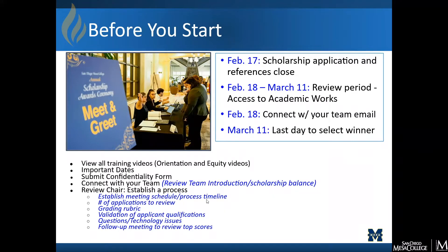Some things to consider: establishing a meeting schedule and a process timeline. Discuss with your team how many applications you want each member to review. Talk about the grading rubric, make sure everyone is on the same page in understanding the grading criteria, as well as validating applicant qualifications. For example, if GPA is an important item to verify, share with the team where to locate this information on the application, and address any questions about technology or general process questions, as some members may be new to this.